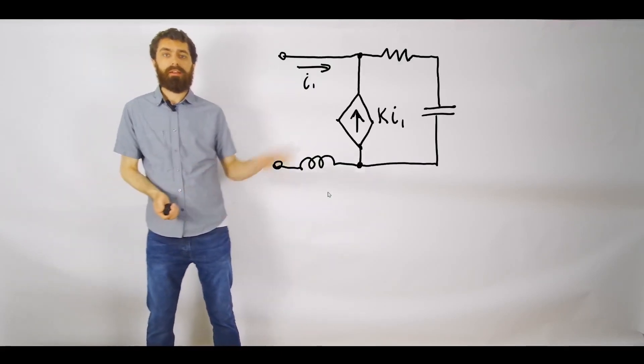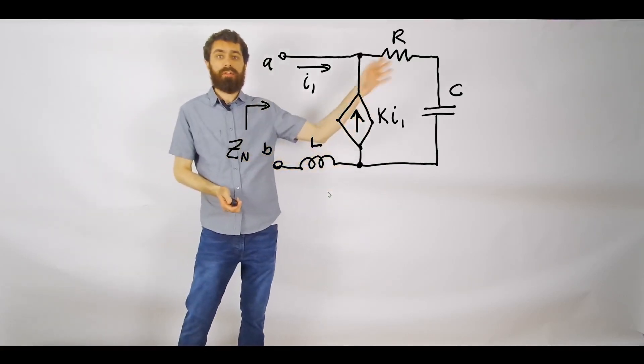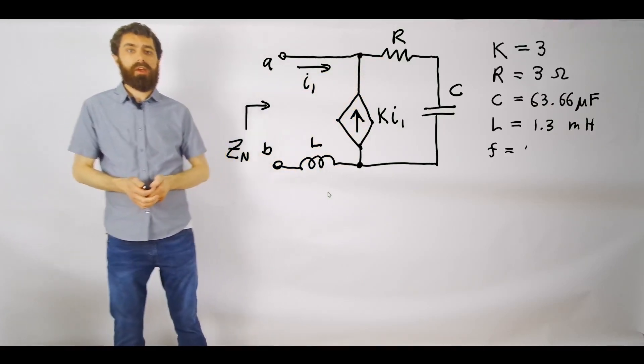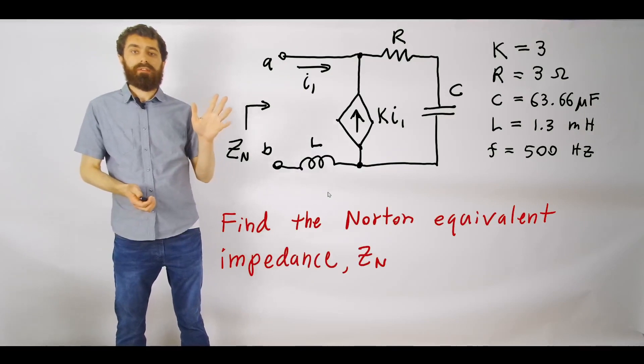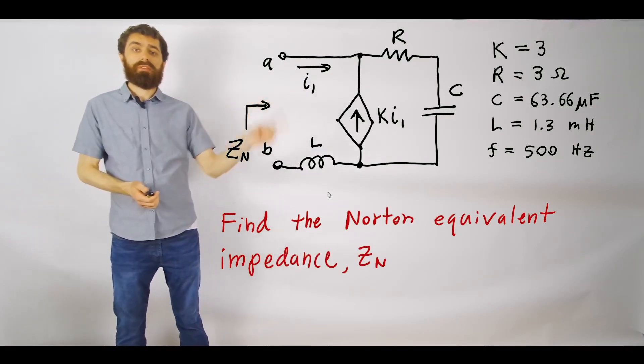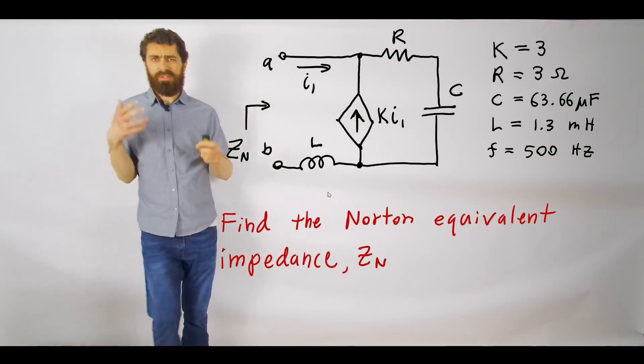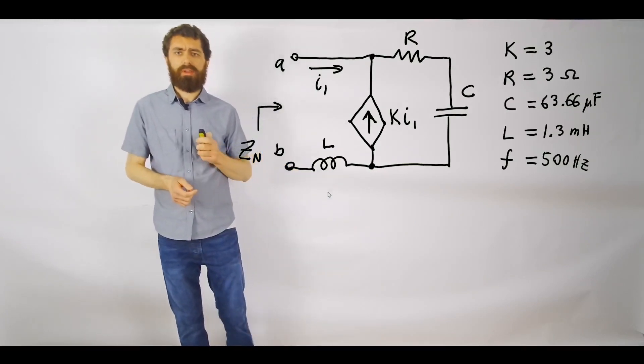This is the problem here. We've got a dependent current source, an inductor, a capacitor, and a resistor, and we are given the following values. What we want to find is the Norton equivalent impedance looking between these terminals a and b. When it comes to working out these problems, the first step is